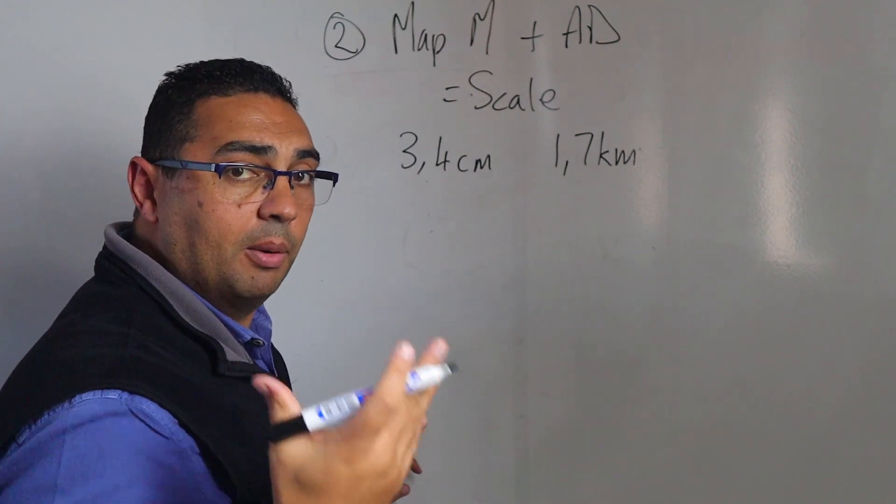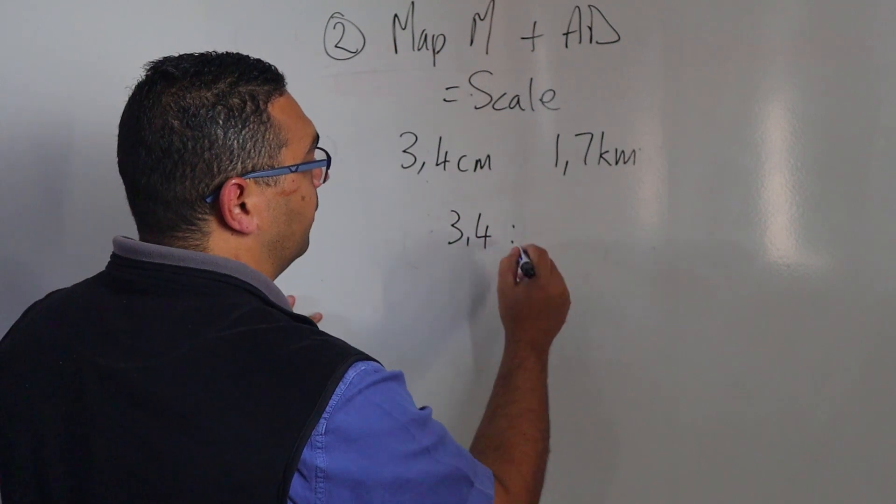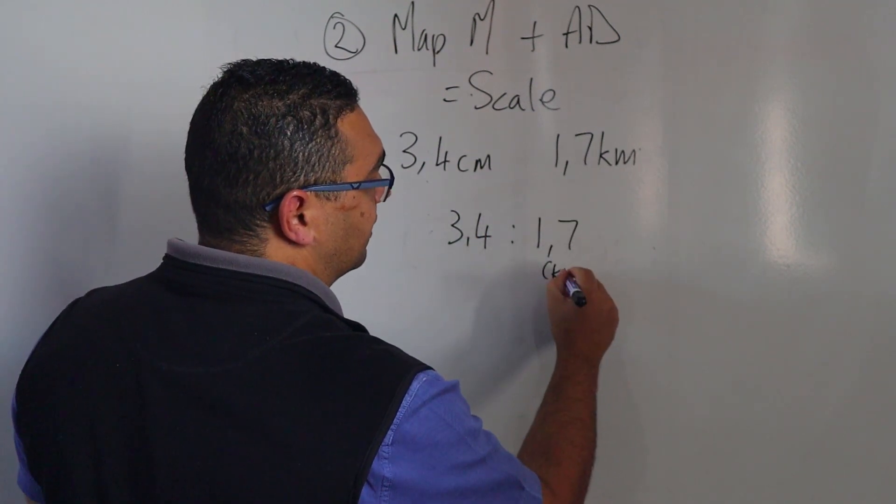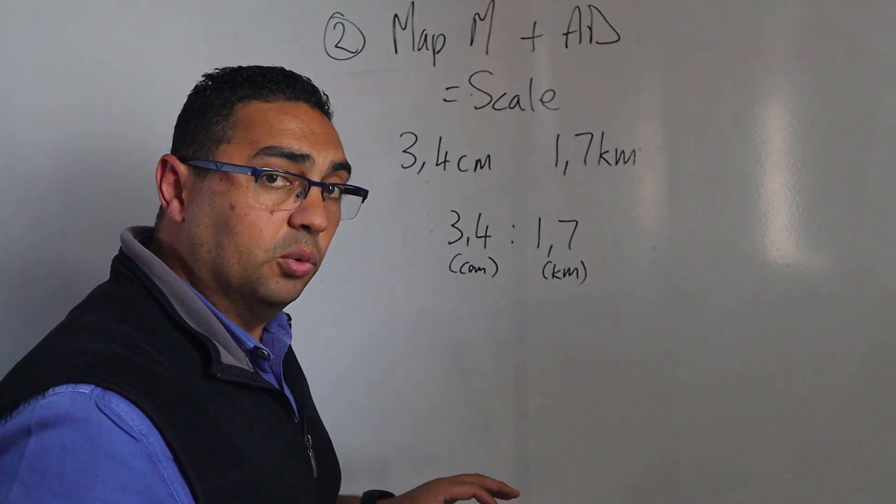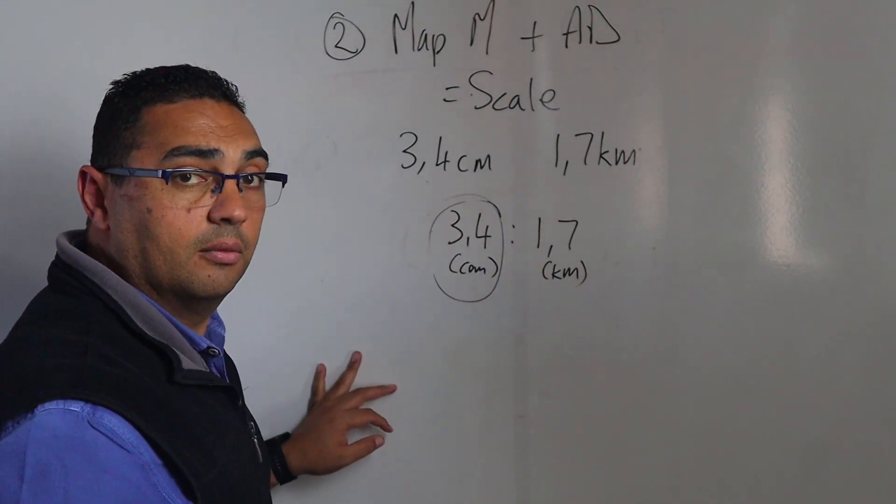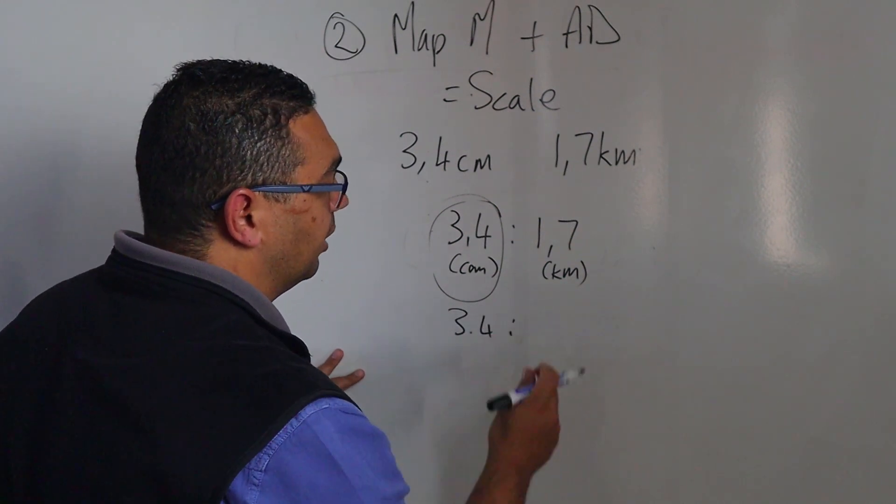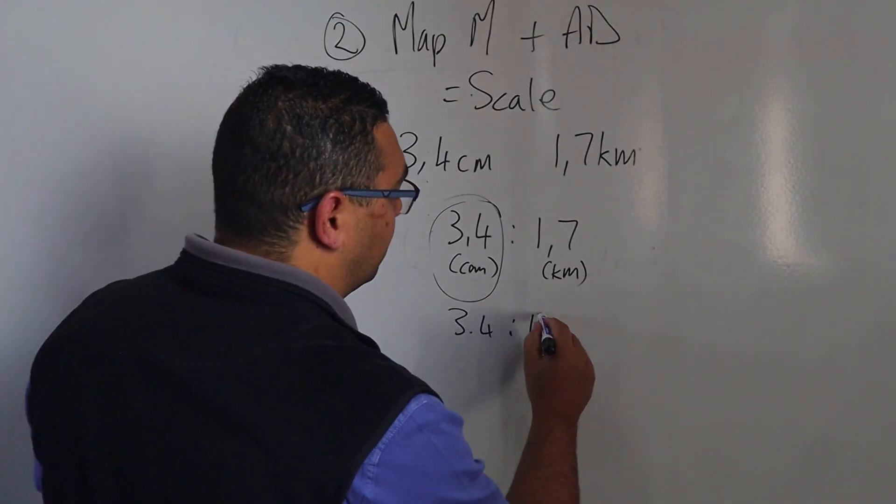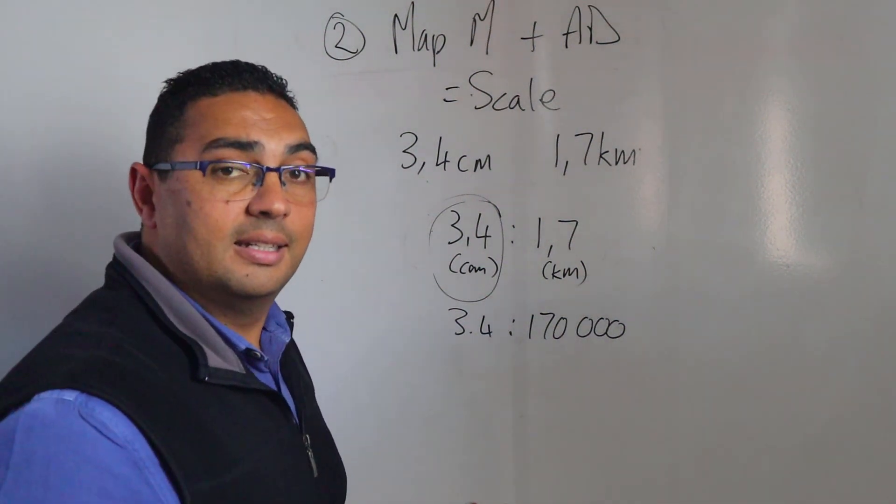So what am I going to do? I'm going to take this and I'm going to put this into a ratio. So I'm going to say 3.4 is to 1.7, but remember this is kilometers and these are centimeters. So what am I going to do? Well I need to get both into centimeters because this is what I'm dealing with. So I'm going to go 3.4 and I'm going to convert my 1.7 kilometers into centimeters, and that's going to end up being 170,000 centimeters.